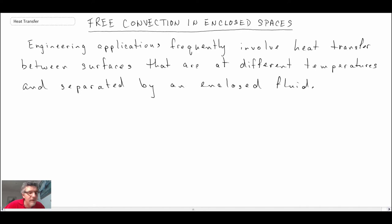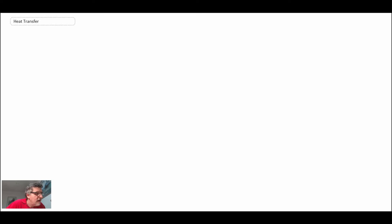That fluid, due to natural convection, can heat up and be put into motion. That's what we'll be looking at when we look at free convection in enclosed spaces. We're going to begin by looking at three different geometries: two horizontal and one vertical.